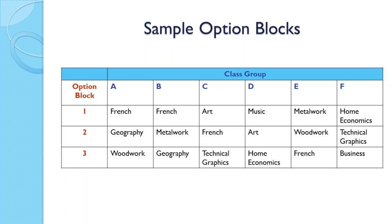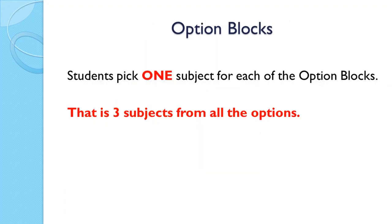At the end of the 15 to 18 week period, students will pick one subject from each option block to carry forward for their junior cert — that is three subjects from all of the options.